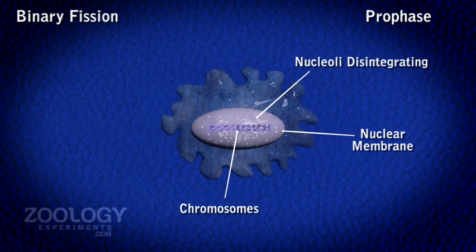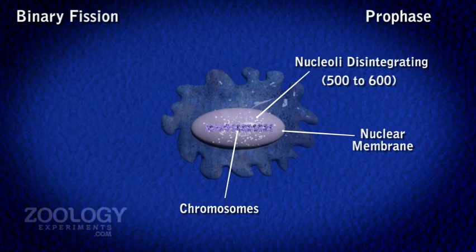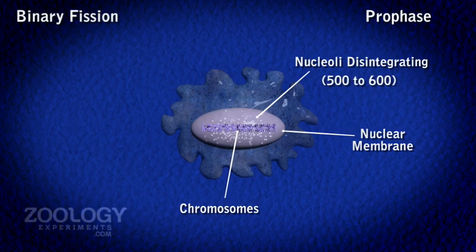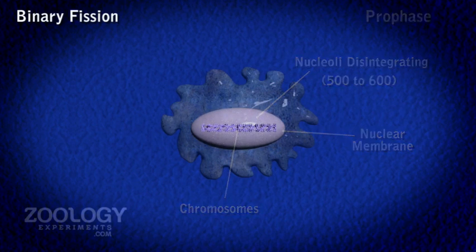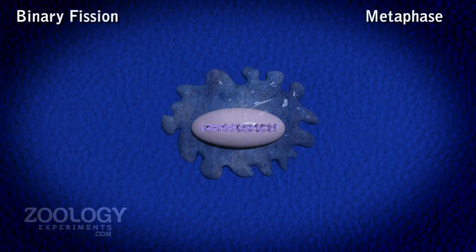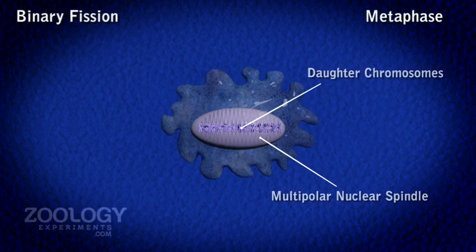More than 500 very small chromosomes emerge in the central nucleoplasm. During metaphase, the metaphase is distinct by the arrangement of chromosomes at the equator region.